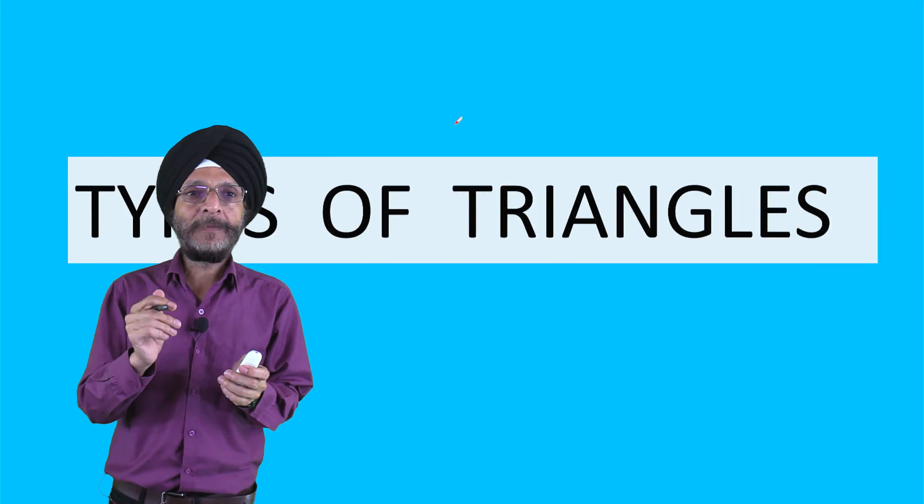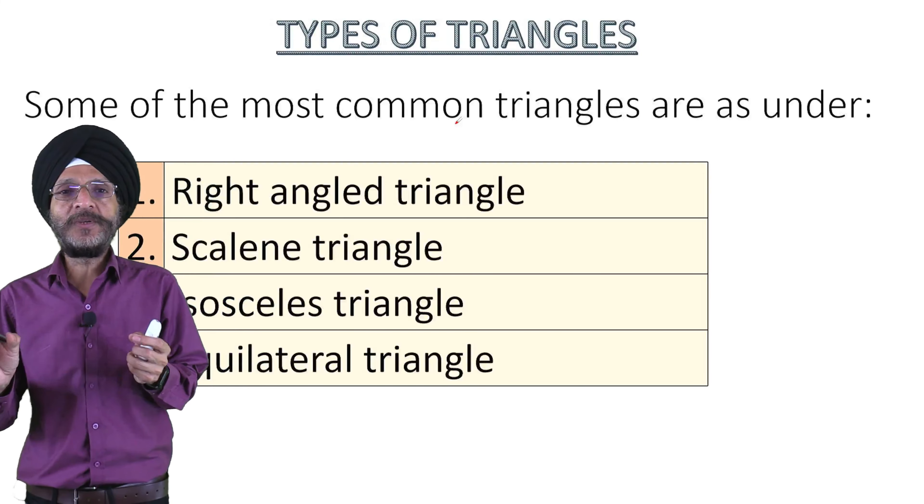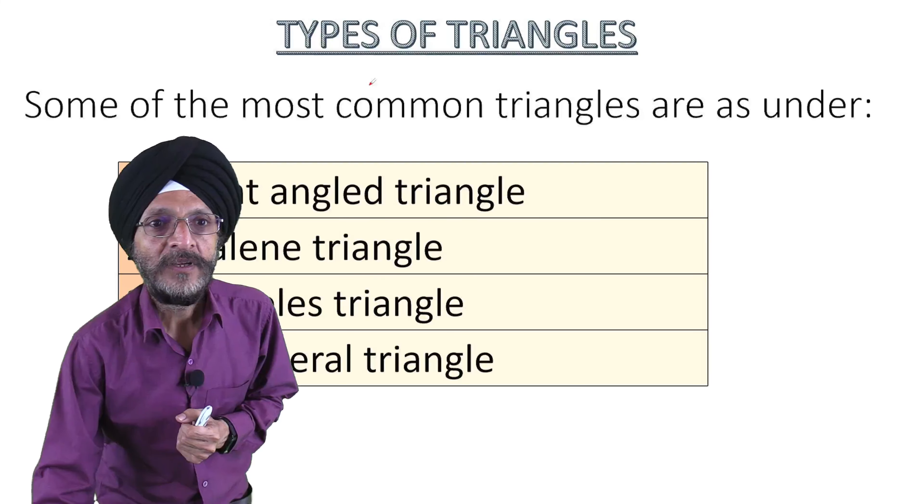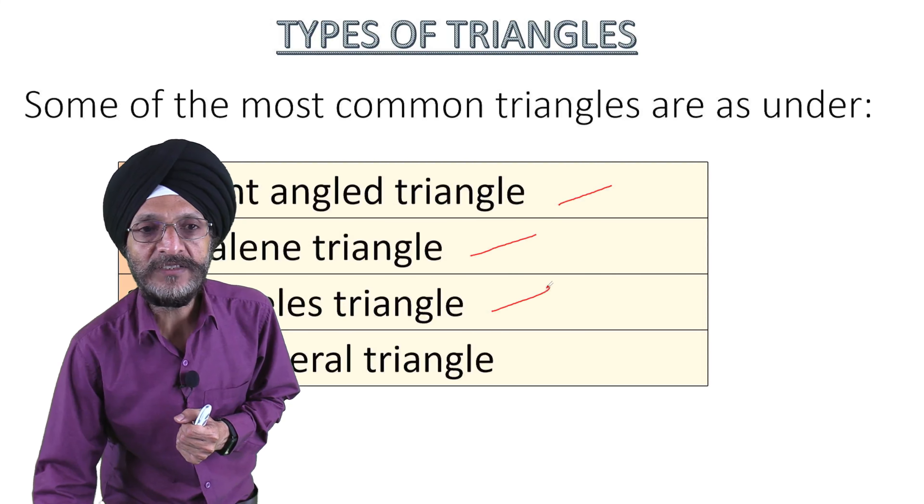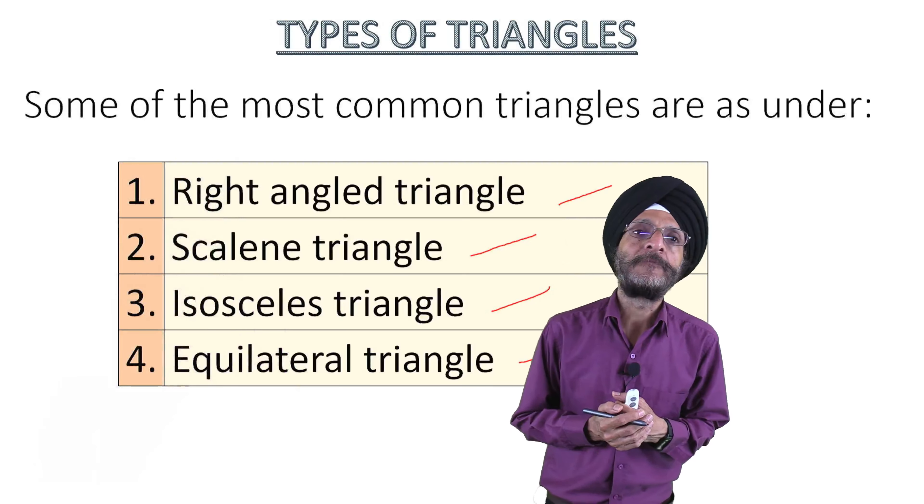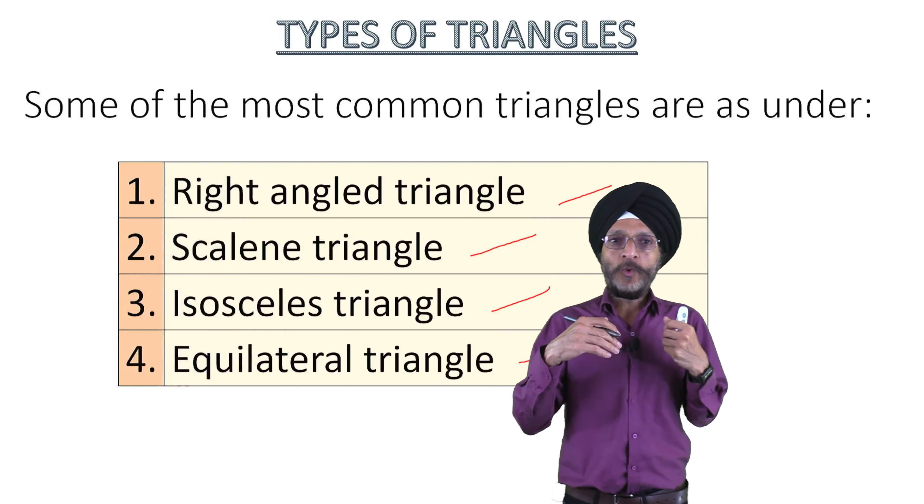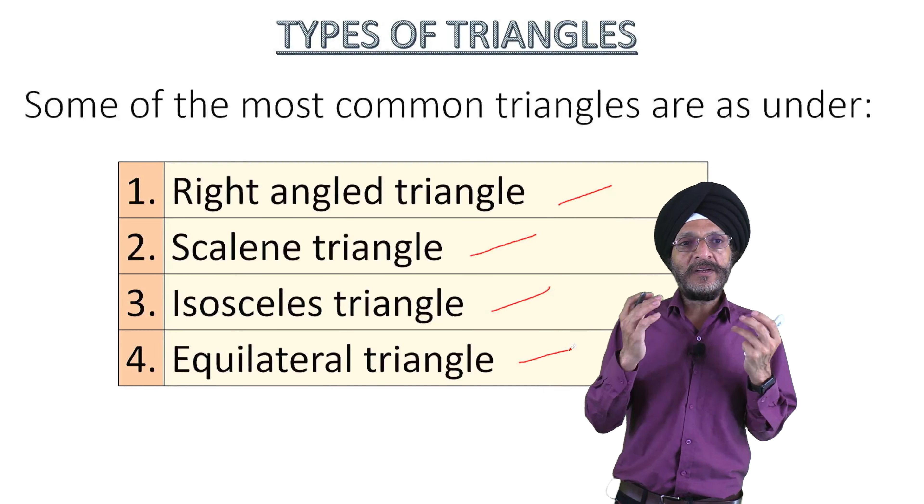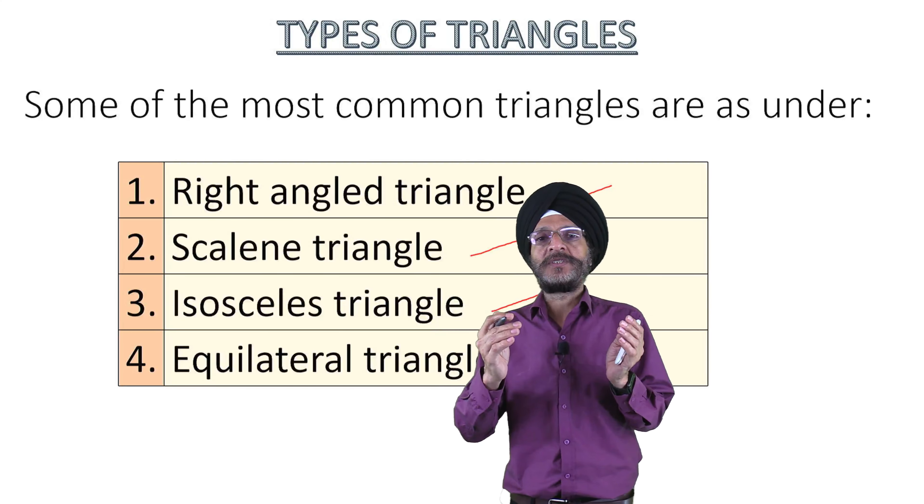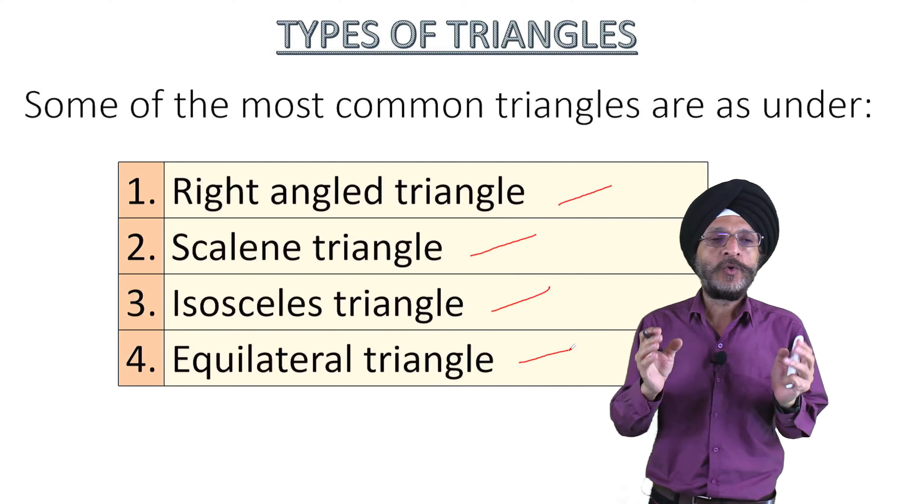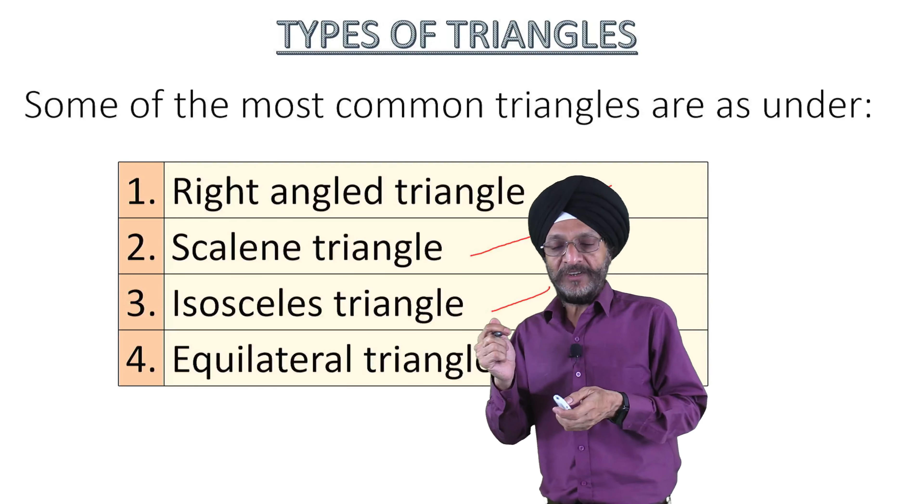Now, types of triangles. Some of the most common triangles are as under: right angle triangle, scalene triangle, isosceles, equilateral triangle. Now going forward, we will learn with the help of examples how we use Heron's formula to calculate the area of these triangles.